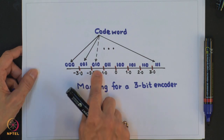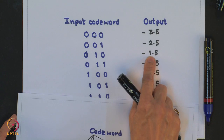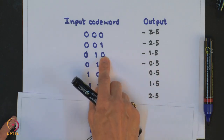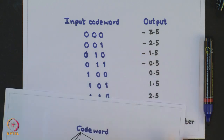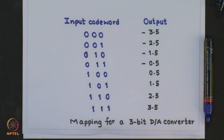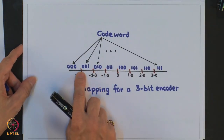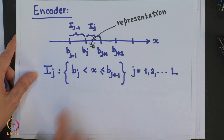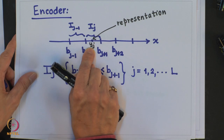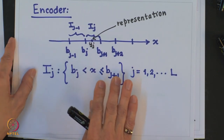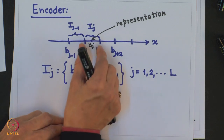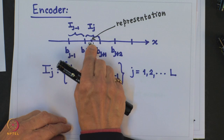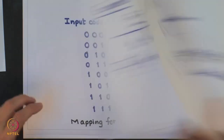If the reconstruction is analog, then the decoder is often referred to as a digital-to-analog converter. A decoder mapping corresponding to the 3-bit encoder shown here would have reconstruction values chosen as the midpoint of the intervals. For example, between −2 and −1 we choose the reconstruction value to be −1.5. So the codeword 010 at the receiver will be decoded as −1.5. The construction of the intervals is part of the encoder design, while selection of the reconstruction values y_j is part of the decoder design. We call this encoder and decoder pair a quantizer.